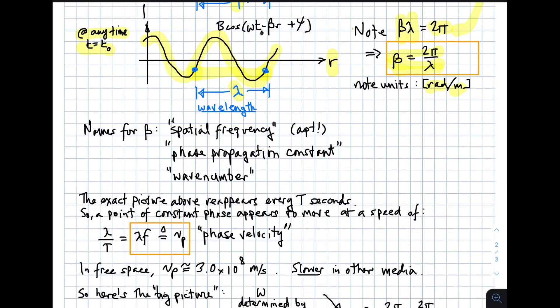So what is beta? We have a bunch of different names for it. A name that I particularly think is apt is spatial frequency, because it is exactly analogous to omega, which you might say is a temporal frequency. It's also sometimes referred to as the phase propagation constant. Propagation referring to the property of a wave that it seems to move energy from point to point. And if your preference is optics, or if you're from optics, or if you're German, you might prefer the term wave number. That's another synonym for beta.